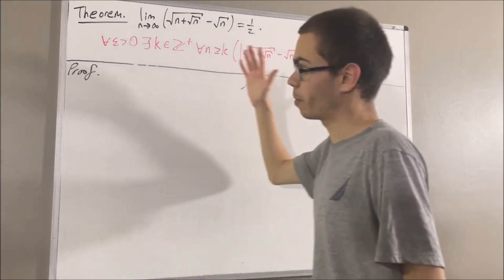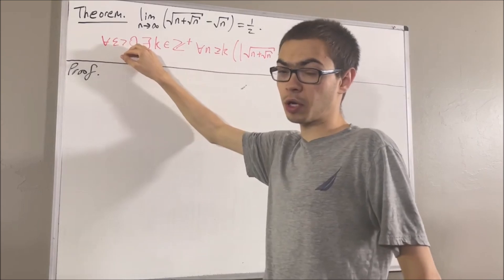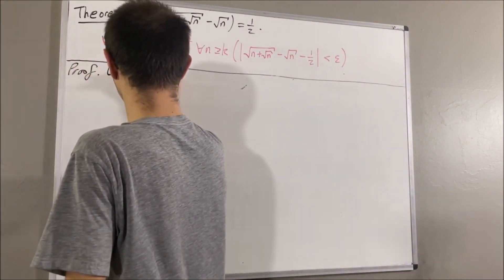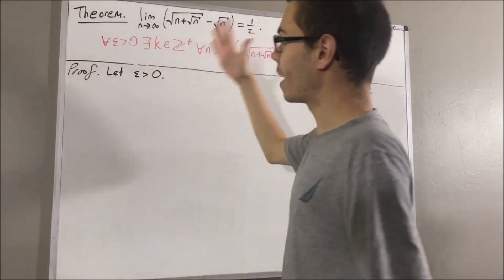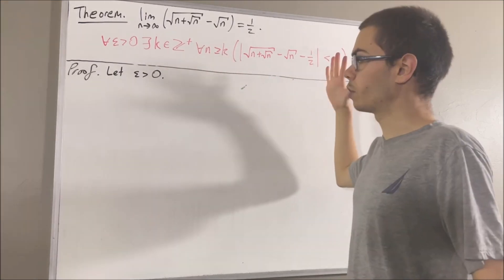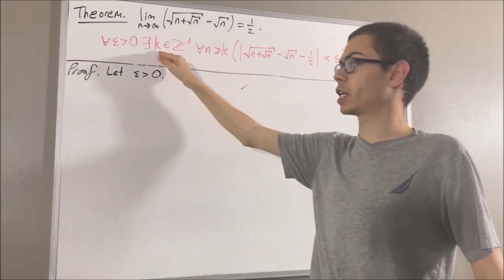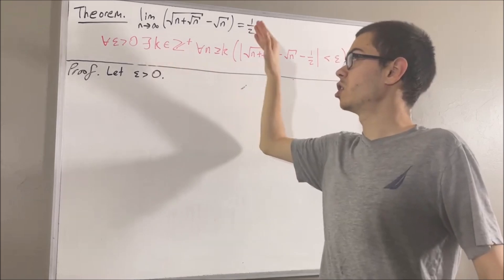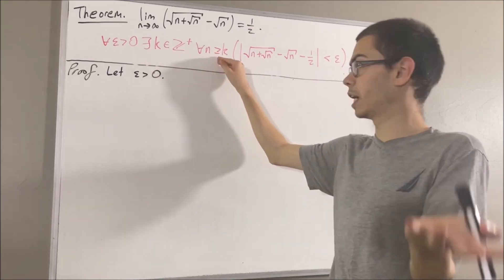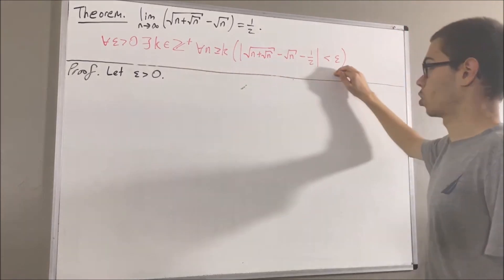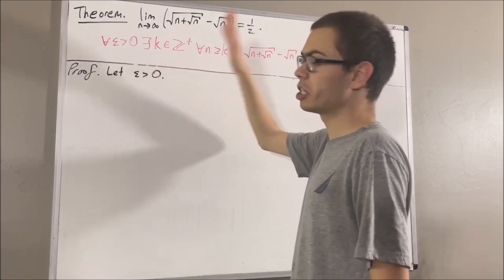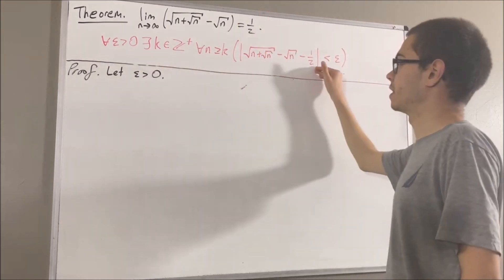And since we're trying to prove a statement about every epsilon greater than zero, let's give ourselves an arbitrary epsilon greater than zero. From here, we want to find a positive integer k such that this is true — we want to choose a positive integer k such that no matter what positive integer n we take to be greater than or equal to k, this inequality will turn out to be true. And to see what we should choose k to be, let's play around with the left-hand side of this inequality.